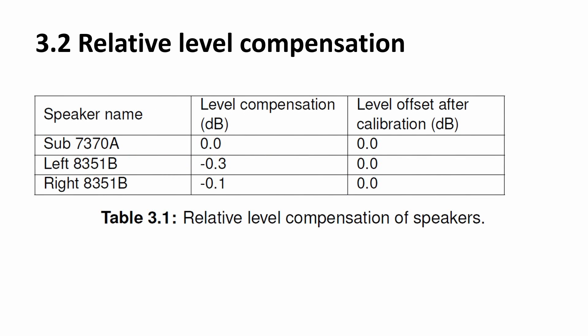Also shown here, as in GLM, is the level compensation. For example, if one speaker is in a corner and the other is not, the frequency response is a little different, and sometimes it's needed to do a level compensation so that in the end you get a proper stereo image with a precise phantom center.